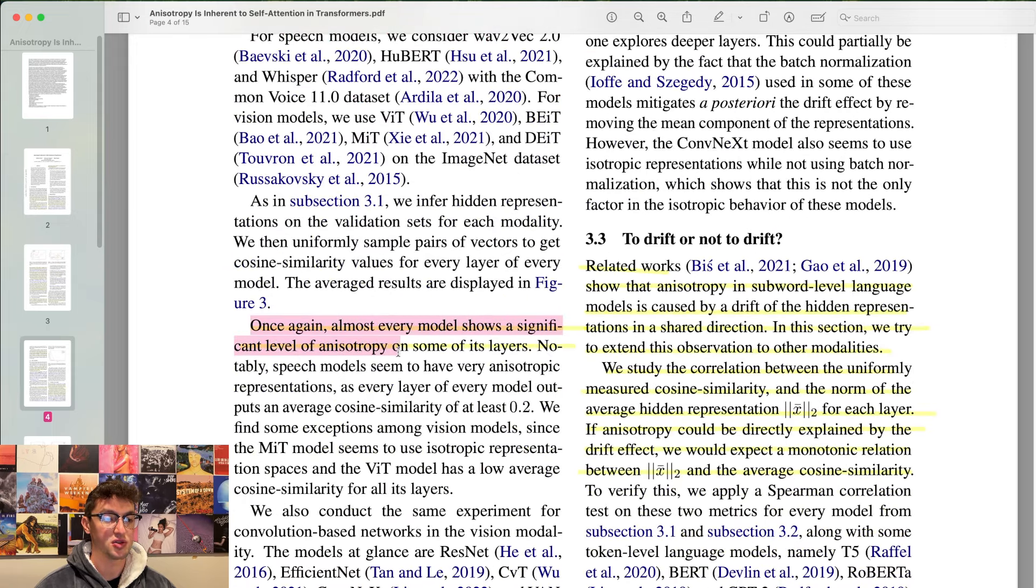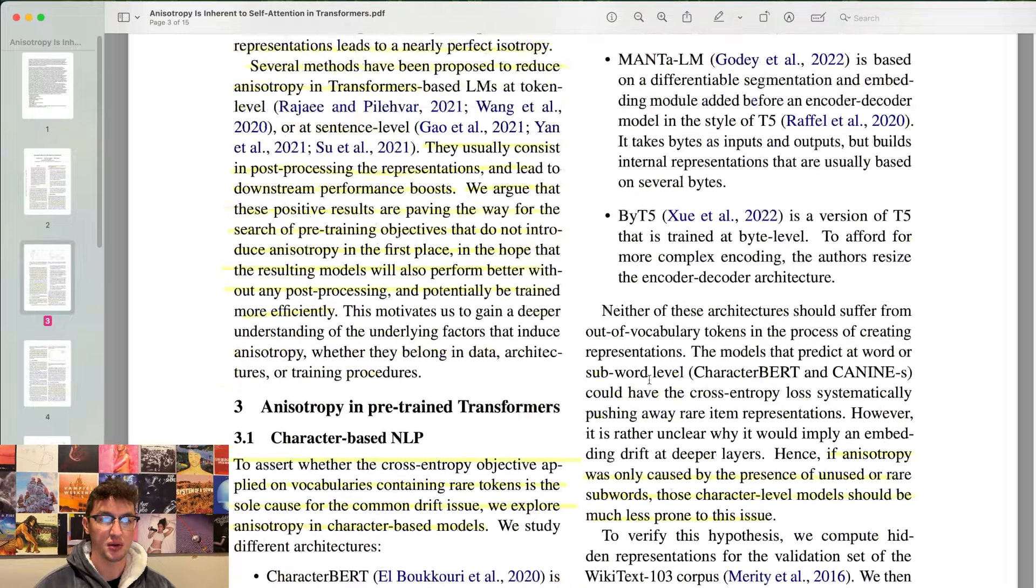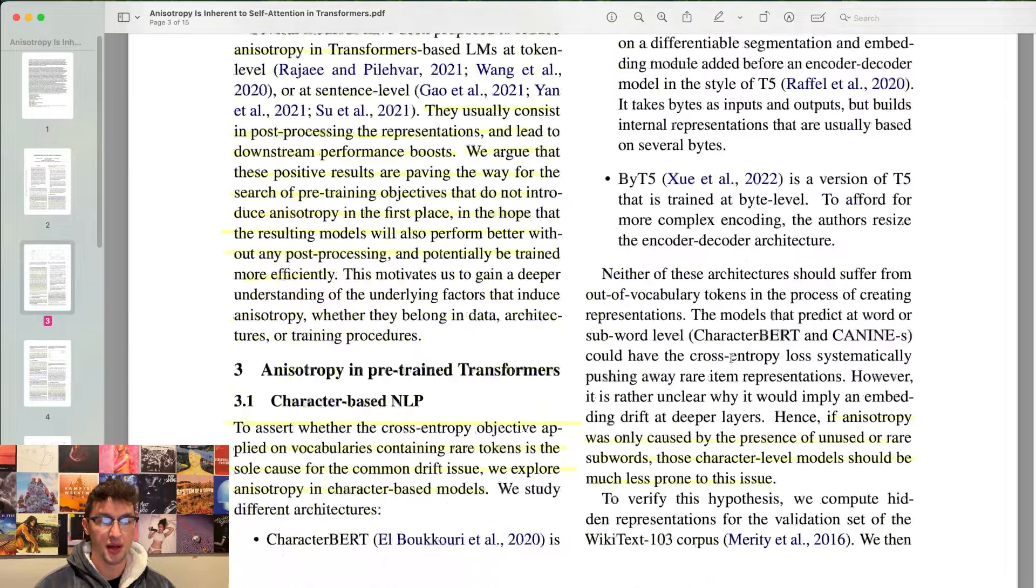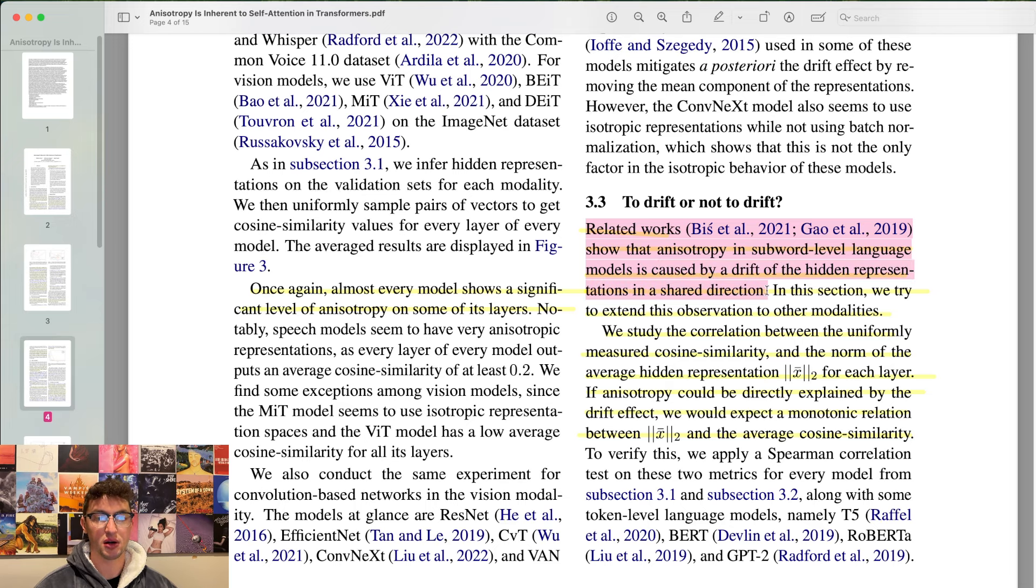It may be argued that anisotropy is related to linguistic properties, thus we proceed to explore the anisotropy problem for transformer-based models in other modalities, specifically speech and vision. Almost every model shows a significant level of anisotropy in some of its layers. This is vision models. Looks like it actually does go down throughout the model, but it starts off higher. The token embeddings are relatively high for most of these models. It seems the language models had much more anisotropy than at least this graph of vision models.